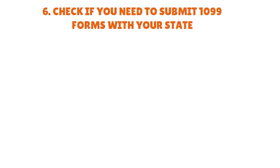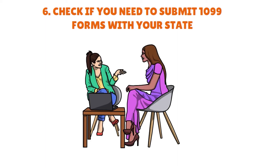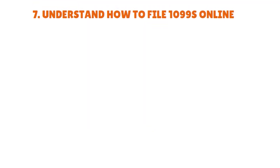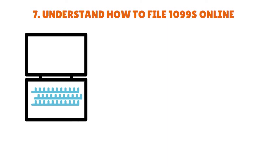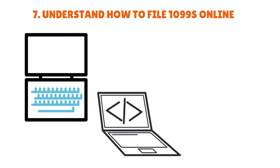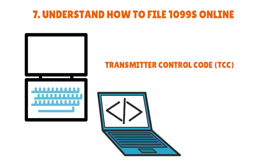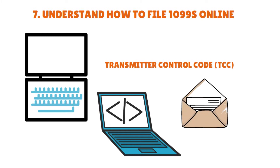Step seven: understand how to file 1099s online. You can e-file Copy A of Form 1099-NEC through the IRS FIRE system — Filing Information Returns Electronically. This form must be produced with compatible accounting software. Before using FIRE, you need a Transmitter Control Code (TCC). You can request a TCC by filling out Form 4419 and mailing or faxing it to the IRS. This form must be submitted at least 30 days before the tax deadline for your Form 1099-NEC.